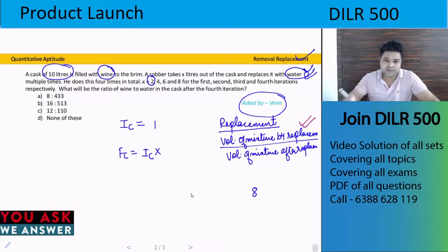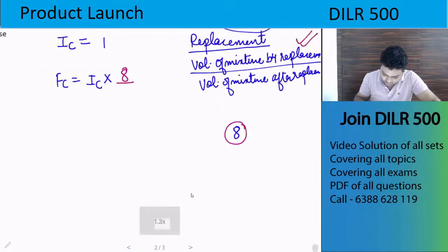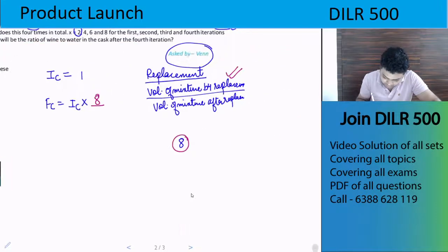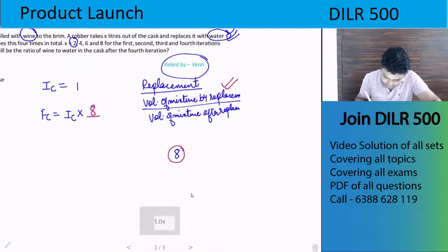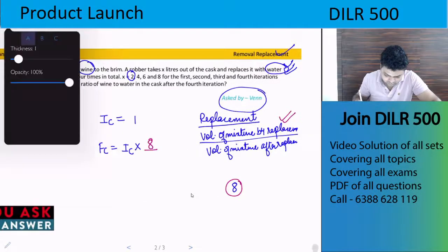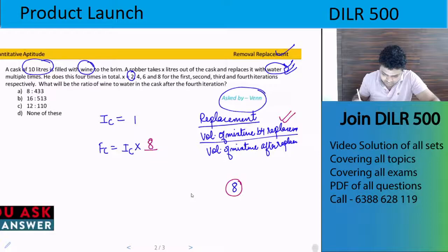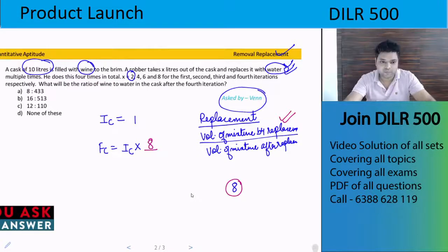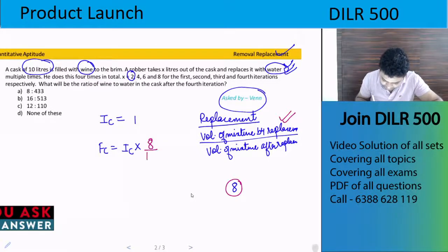Right, so when we replace it, the mixture volume was 8. When we replace with 2 liters of water, then the mixture volume becomes 10. So the first multiplying factor is 8 divided by 10.